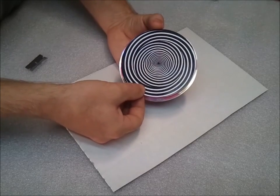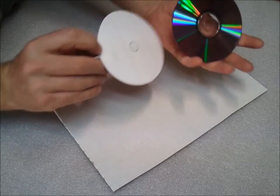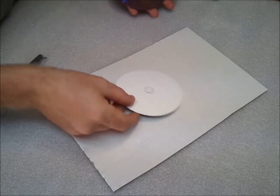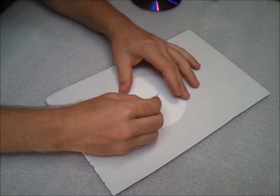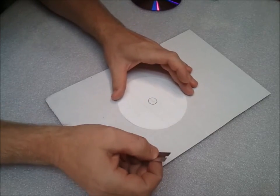Once you have it cut out, center it on the disc. And turn it upside down and trace the circle. Then we want to cut the circle a little bit bigger than the circle itself, about an eighth inch larger.